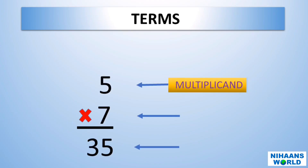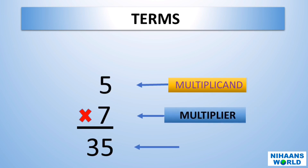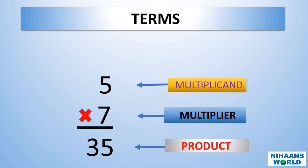Multiplicand: the number that is multiplied by another number is called the multiplicand. Multiplier: the number by which another number is multiplied is called the multiplier. Product: the number obtained by multiplying two numbers is called the product.